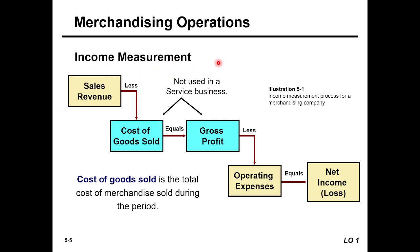Now let's look at income measurement for merchandising companies. The formula is: Sales Revenue less Cost of Goods Sold equals Gross Profit, and then less Operating Expenses equals Net Income or Net Loss. Note that in a service business, Cost of Goods Sold and Gross Profit are not used — these two items are unique to merchandising companies.